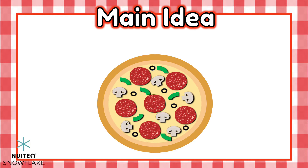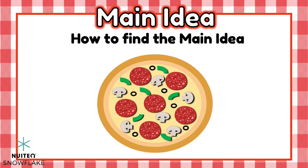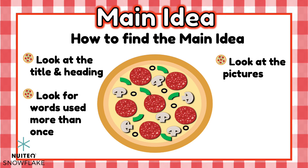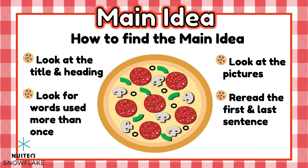How do we find the main idea? First, we look at the heading of a text. Next, we look at pictures. We can also look for words that are used more than once. And we can even re-read the first and last sentence. These are some ways we can find the main idea.